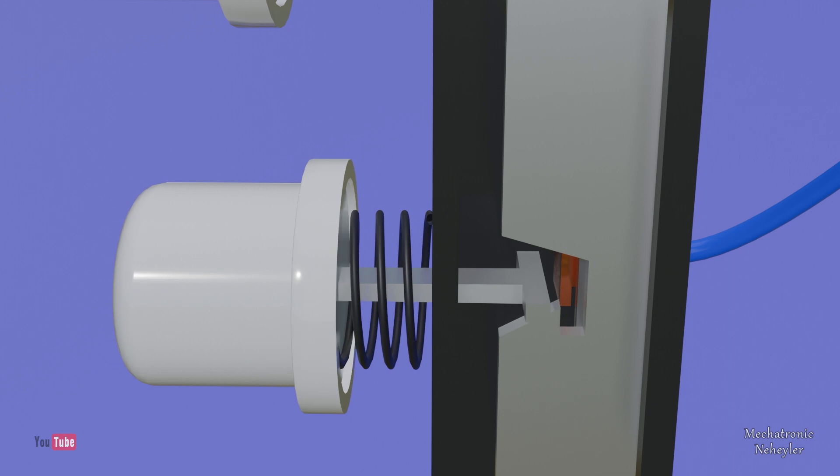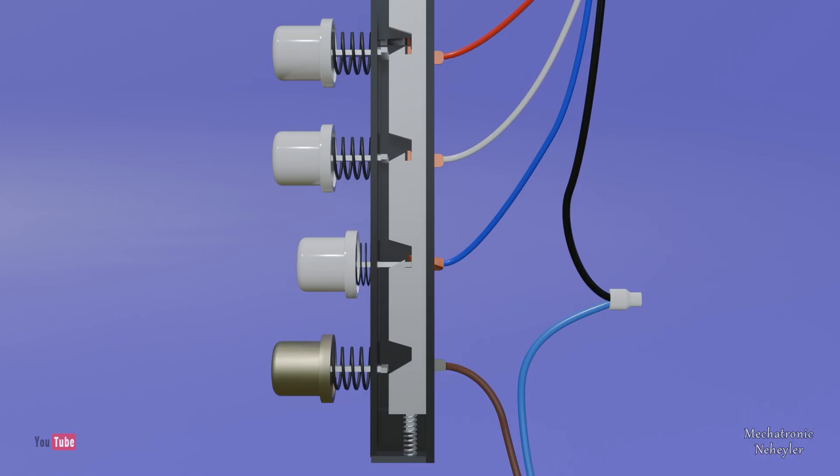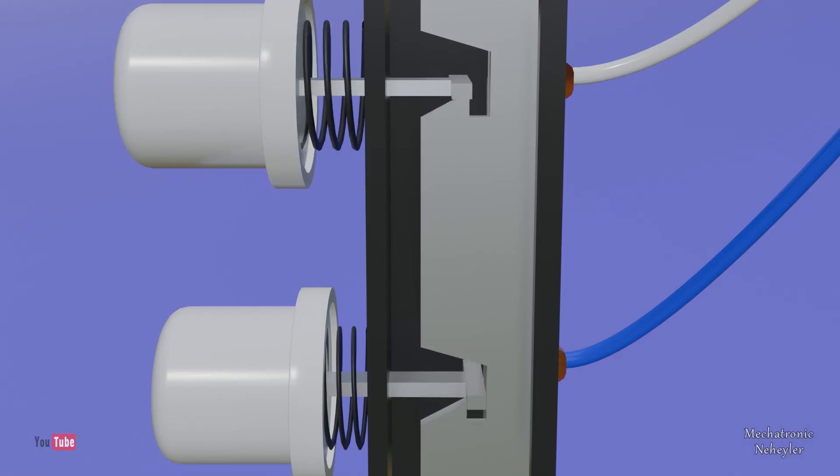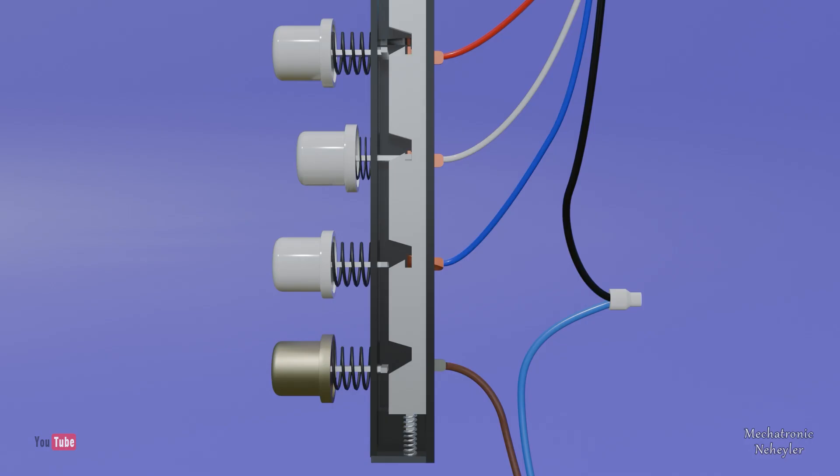When you press a button, the plate slides down and then retracts leaving the button hooked so that it cannot be released. If we press another button, the plate slides down again releasing the previous button and remaining hooked. The buttons retract thanks to the spring they have. This way we can change the fan speeds.